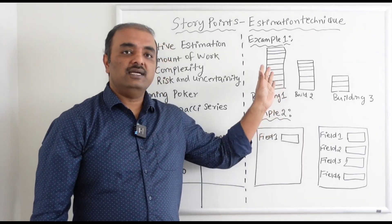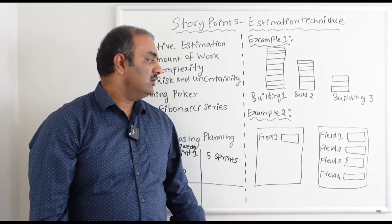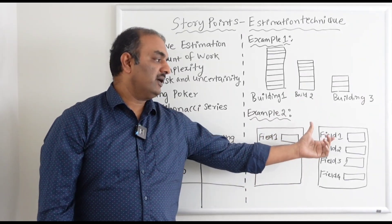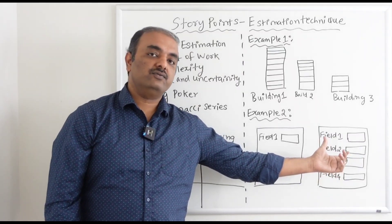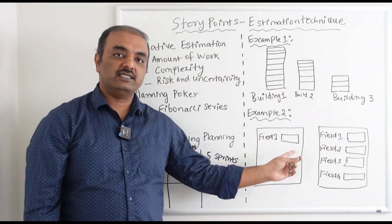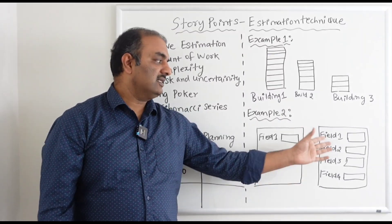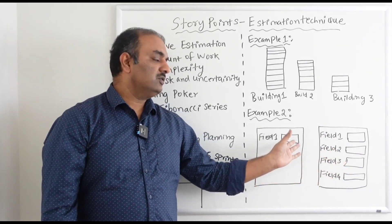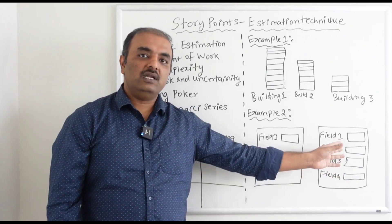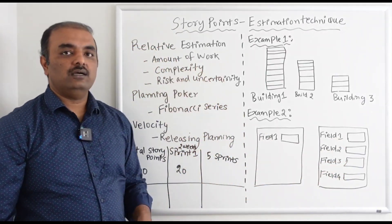This is a general example. In an IT context, say you are building one screen with one field compared to another screen with four fields. The first screen is very straightforward — just one text box — so it takes one story point. When you relatively estimate the second user story, it has three more fields, a total of four, so you take the amount of work into consideration.